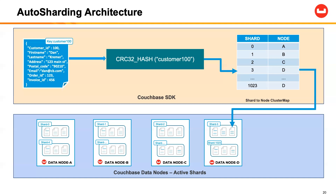For the reasons that distributed databases are popular, if for some reason this four-node cluster loses, for example, data node D, the data will then be redistributed among the three remaining nodes. Because of that redistribution, the cluster map will be updated. So for example, because of the loss of one node, shard 3 will now be placed on data node C.